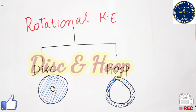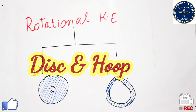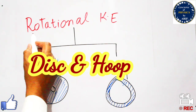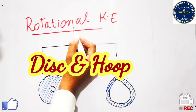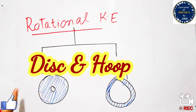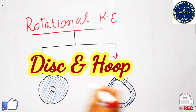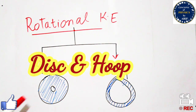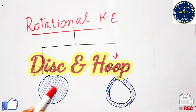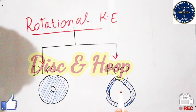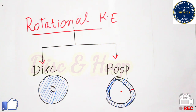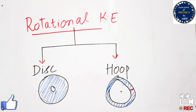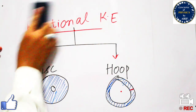Hi guys, welcome to my YouTube channel. In this video we will discuss rotational kinetic energy. We previously discussed rotational kinetic energy generally, but now we will discuss rotational kinetic energy for a disk and for a hoop. A disk has an extensive radius while a hoop has a very small radius. We will briefly discuss and differentiate between the rotational kinetic energy of a disk and a hoop separately.